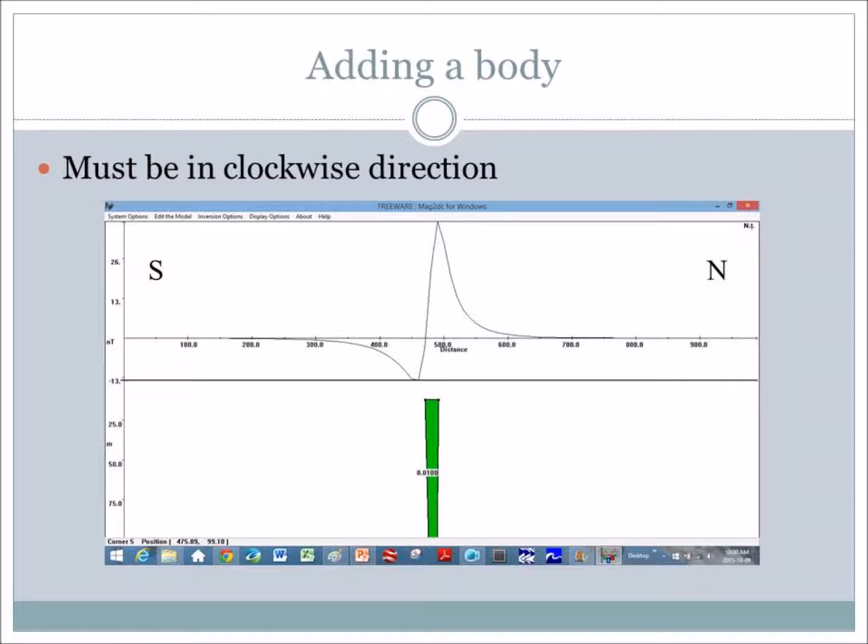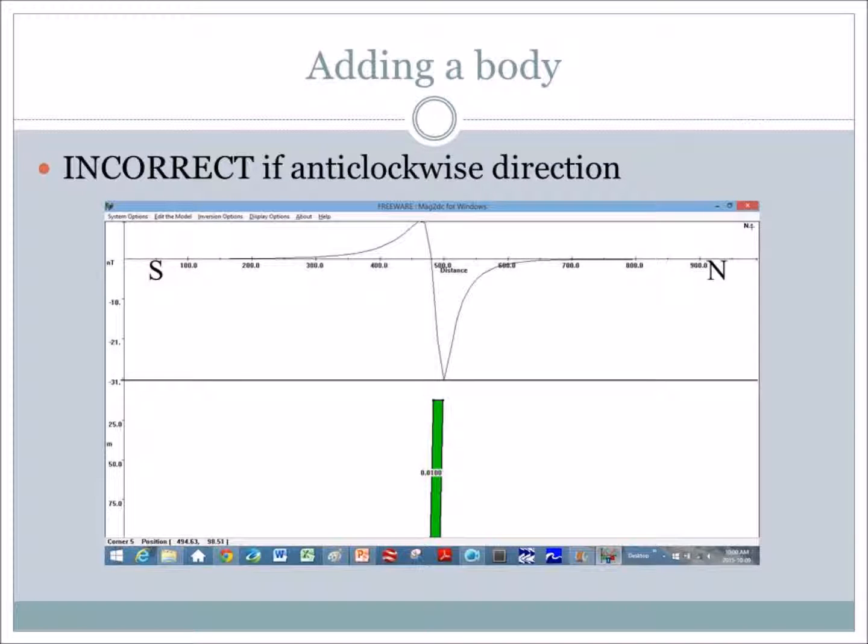Something else that's also very important in MAG-2DC is that when you put a body in, it must be put in a clockwise direction. So that means when you click the points to add the body, you must go clockwise. And you can see here in this image what your anomaly will look like. If you're going from south to north, the negative will be towards the south, and the positive will be towards the north. That is always the case for a southern hemisphere profile. So the positive will always be towards the equator, so towards the north. If you put the points of the body in an anti-clockwise direction, you can see that your anomaly is flipped around. And so you get an incorrect anomaly. You'll struggle to model your data because your data will be in the opposite direction. And so very important to remember, always put your points in in a clockwise direction.